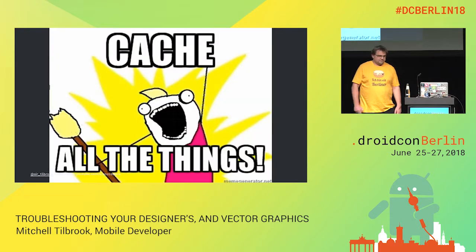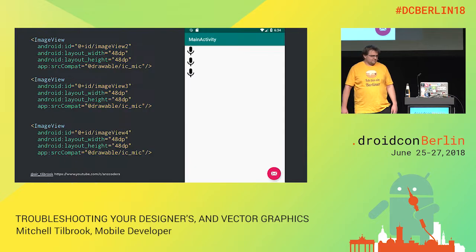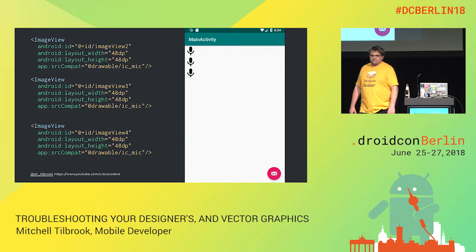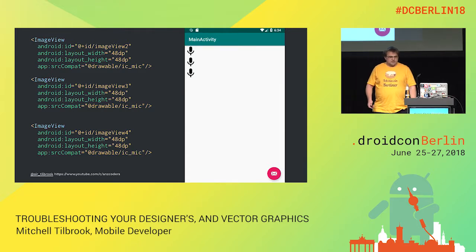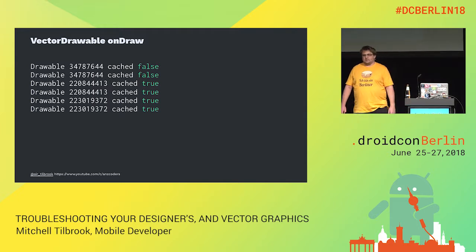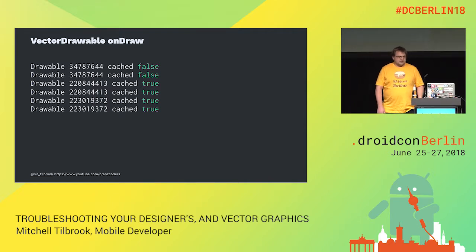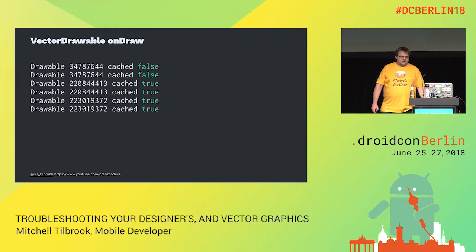Now let's talk about cache — my favorite topic. We're just going to draw the microphone icon three times: no tinting, no nothing, just draw it three times. If we log out what's happening, we can see that onDraw has been called six times — this might be because I used a bad layout. We can see that the cache is missing on the first two times it tries to draw, but every other time since then it's hitting the cache.